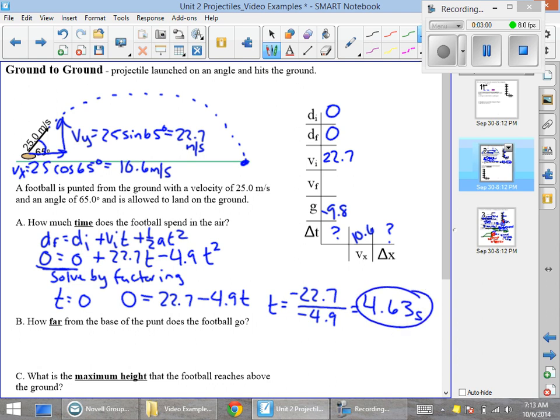We end up with 4.63 seconds as the time. I can actually now plug that in here into the chart. Our time is now 4.63 seconds. And now that we have our time and our vx, we can actually use delta x equals vx times t.